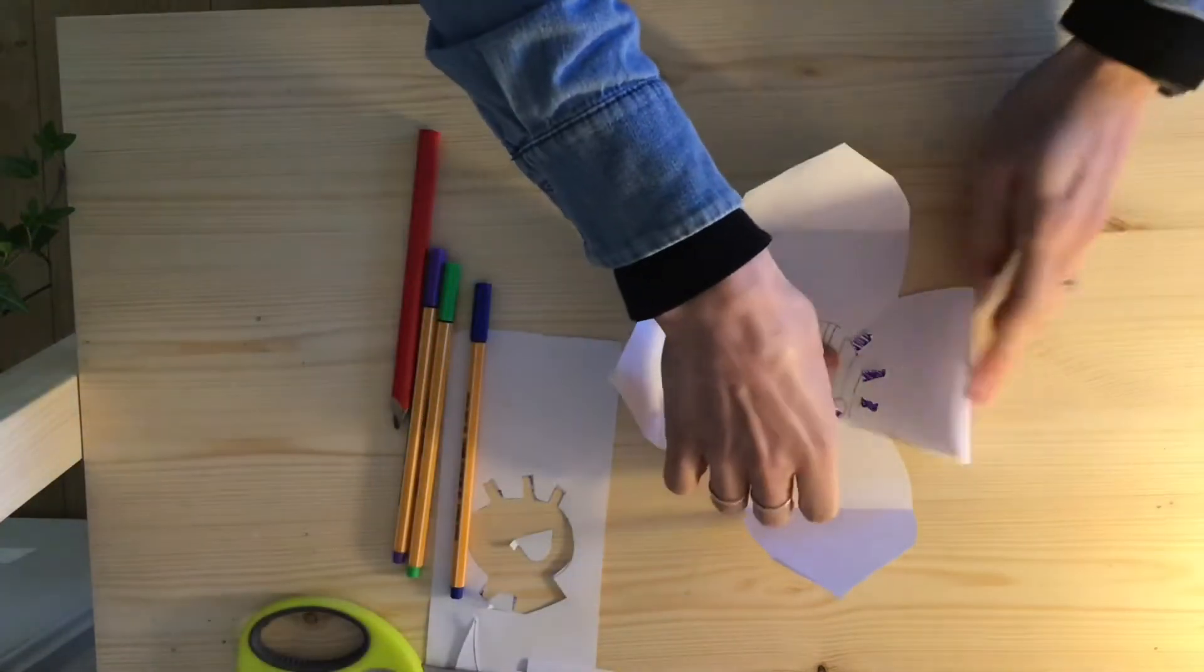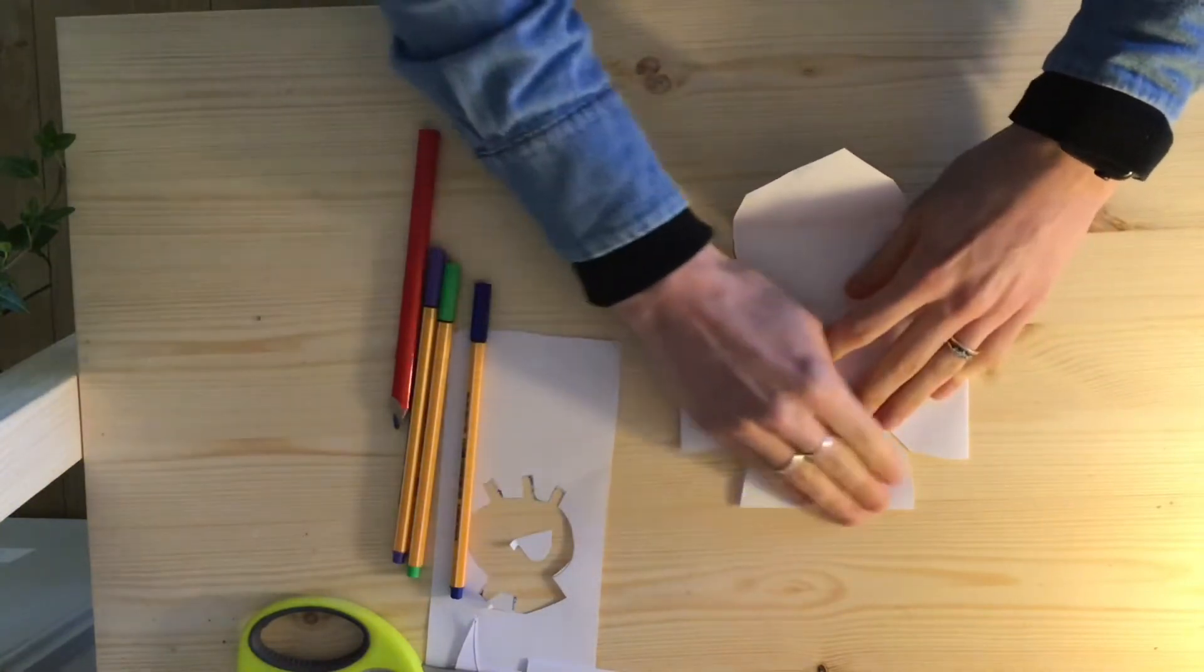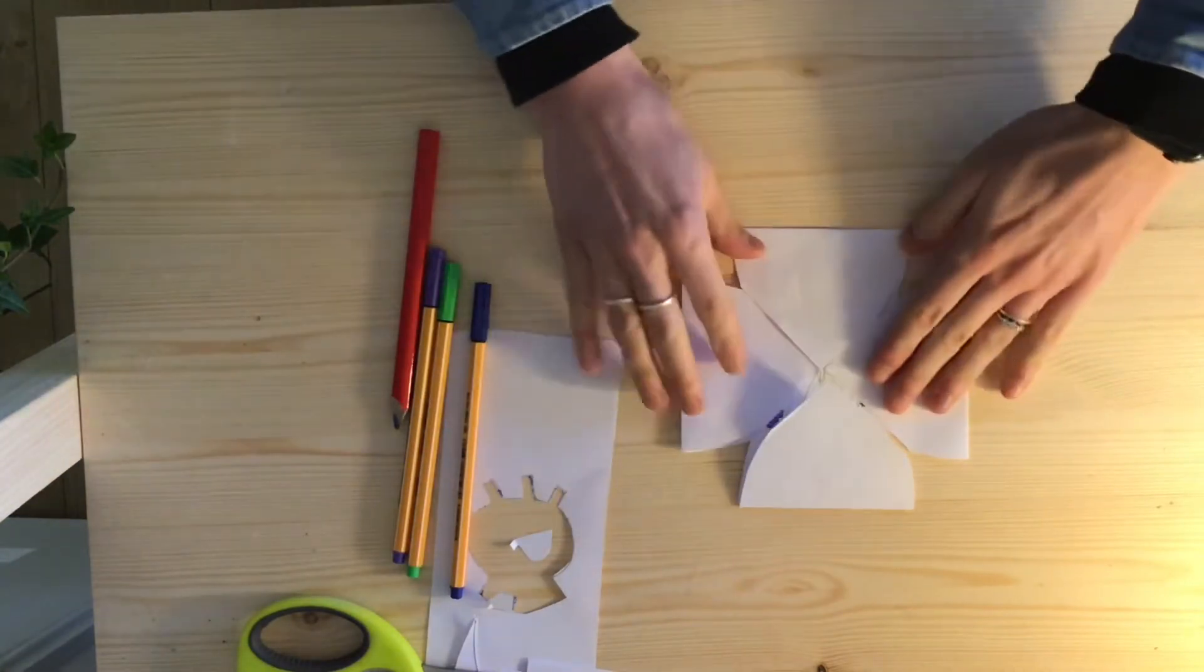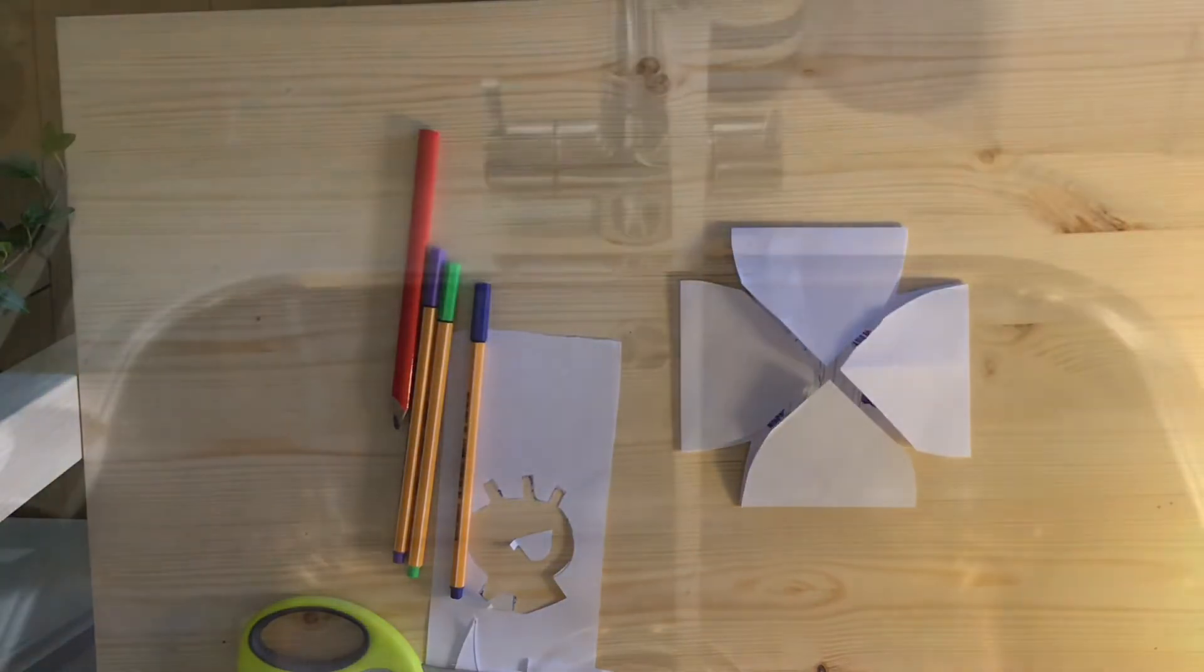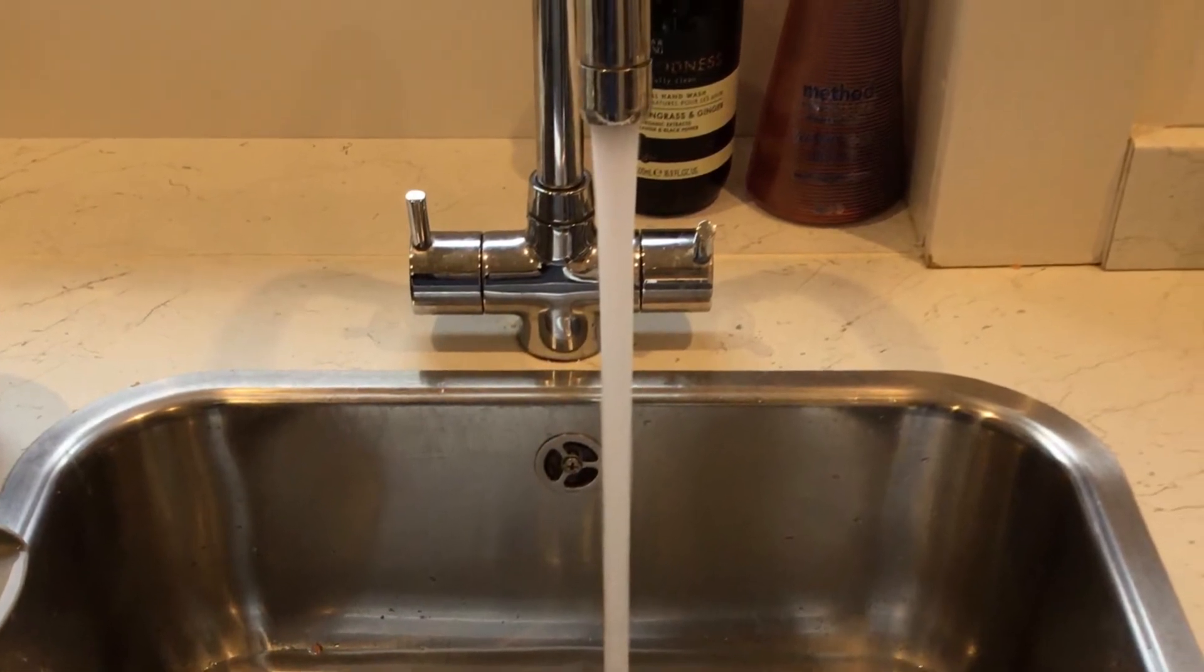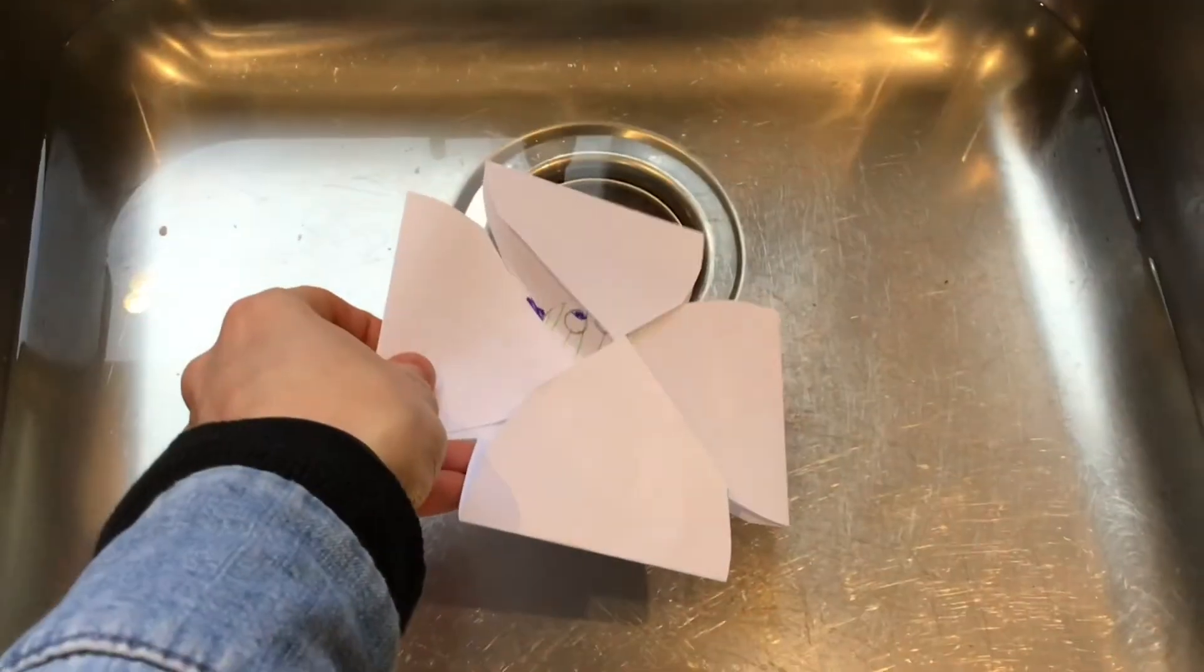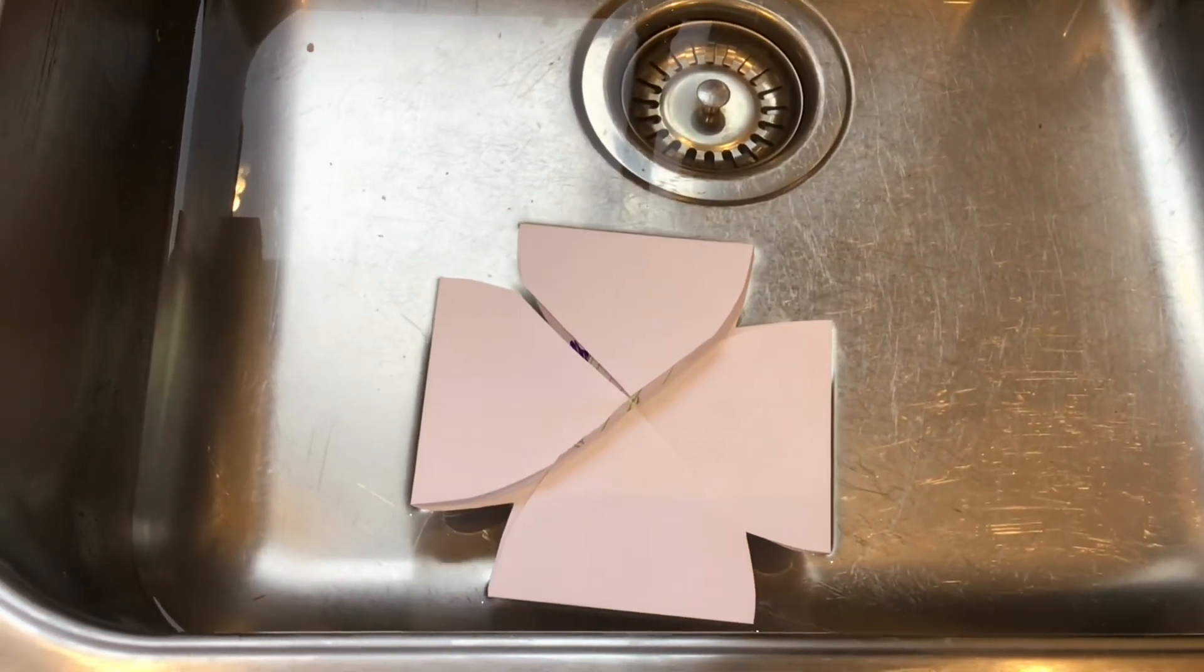Next, put your beetle or animal of choice inside your flower and fold the corners in of the petals around it. Fill up a large bowl or a sink full of water. Very carefully place your folded flower on top of the water.